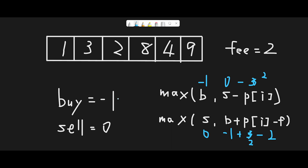On the fourth day (price=8): current buy max profit is still -1, since 0 - 8 = -8 is worse. For sell profit: 0 versus -1 + 8 - 2 = 5. So we update sell profit to 5. This is now the max profit through the first four days.